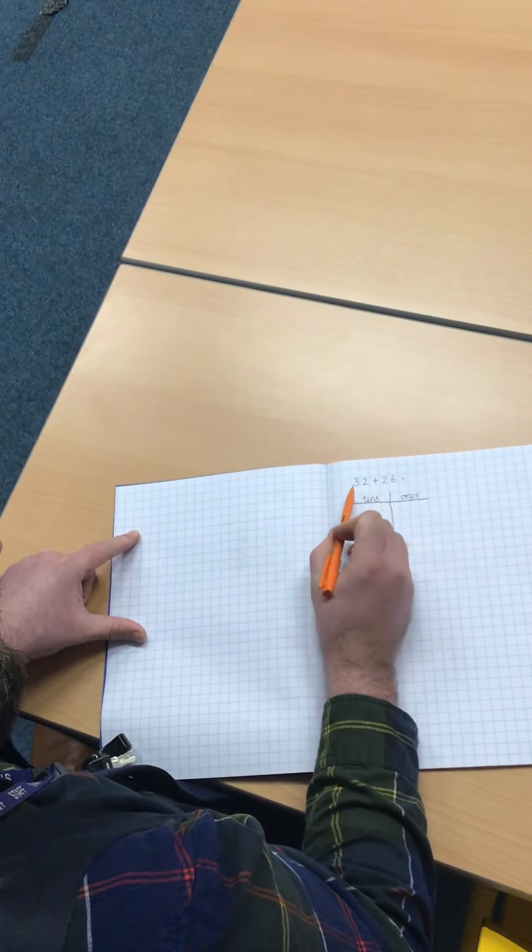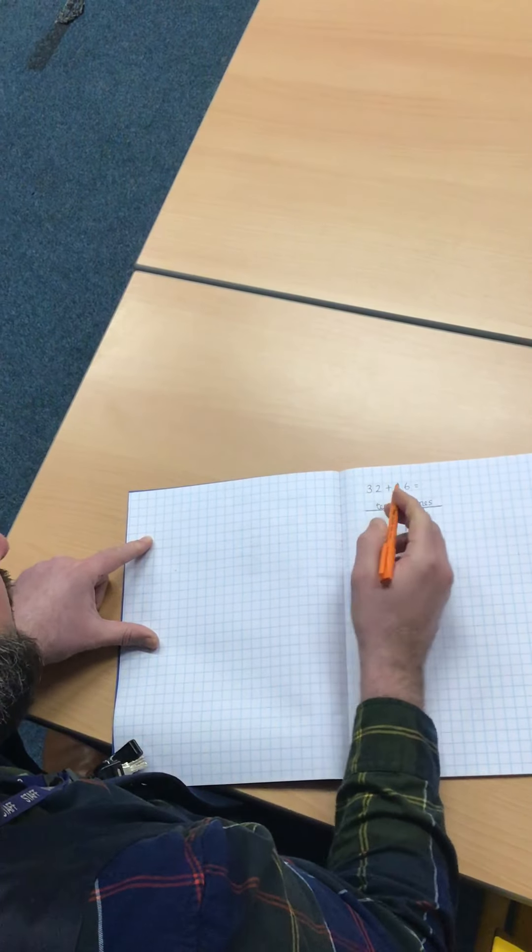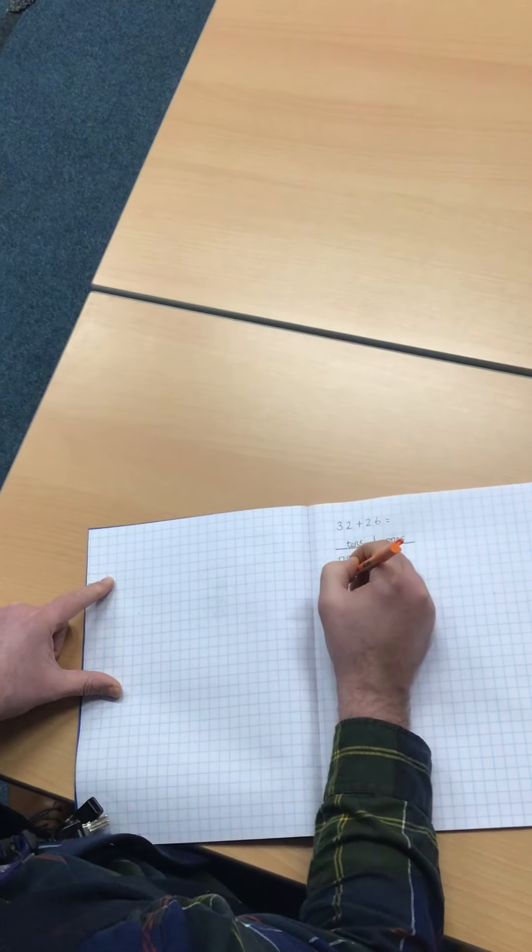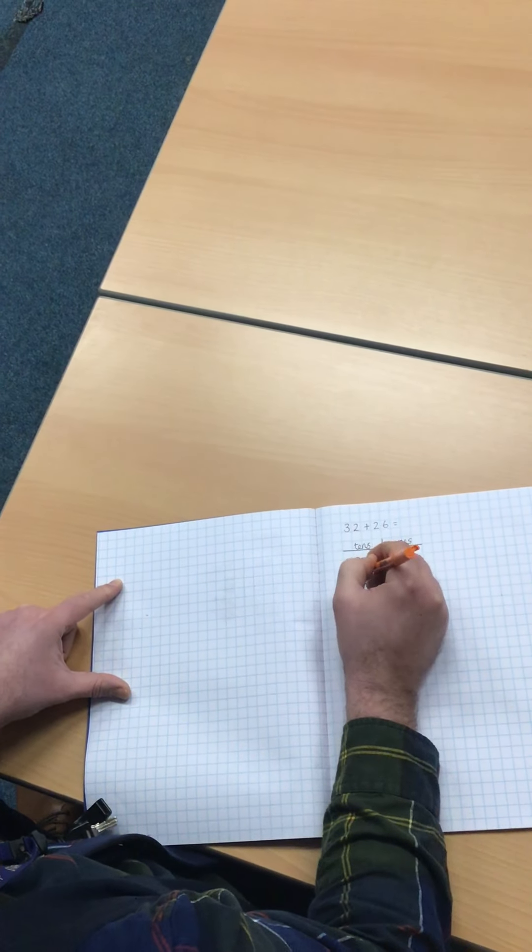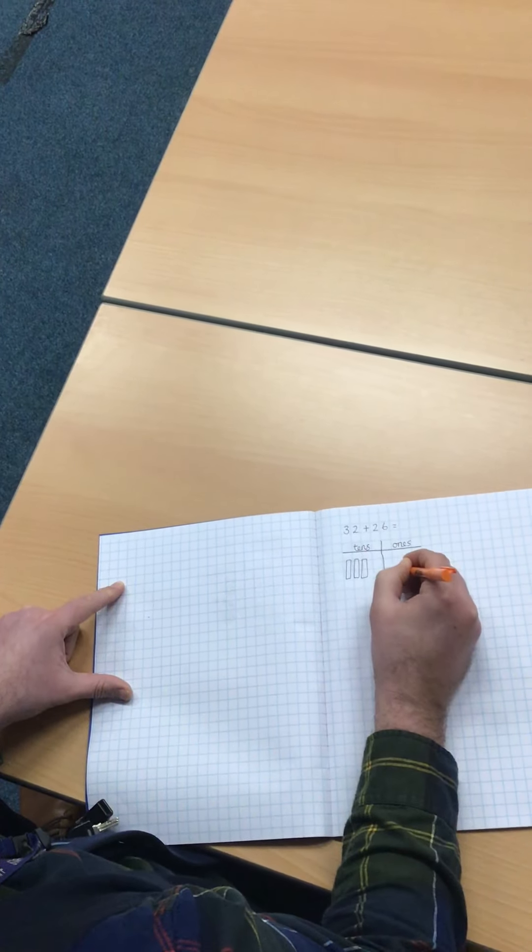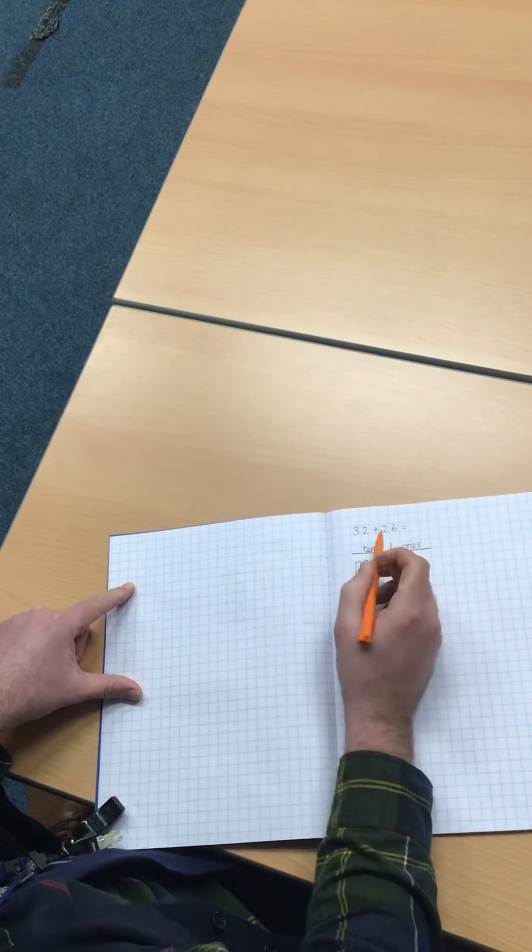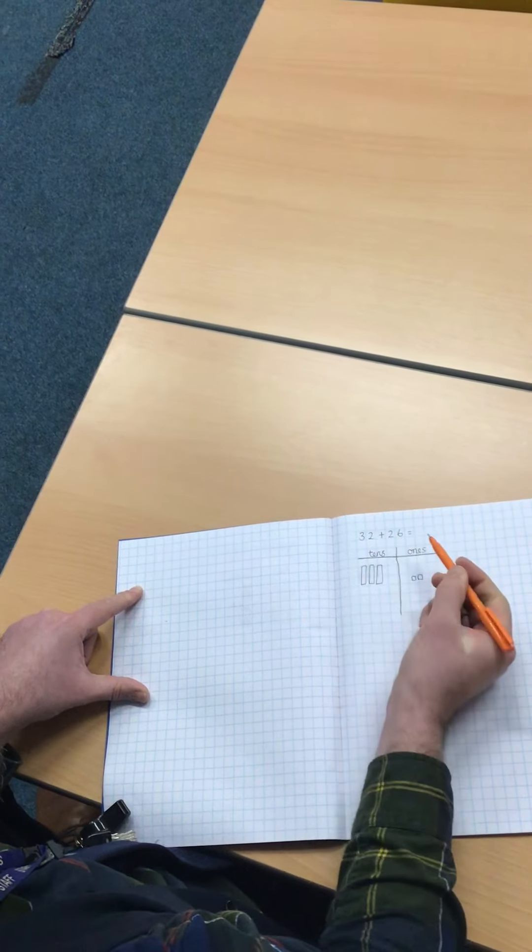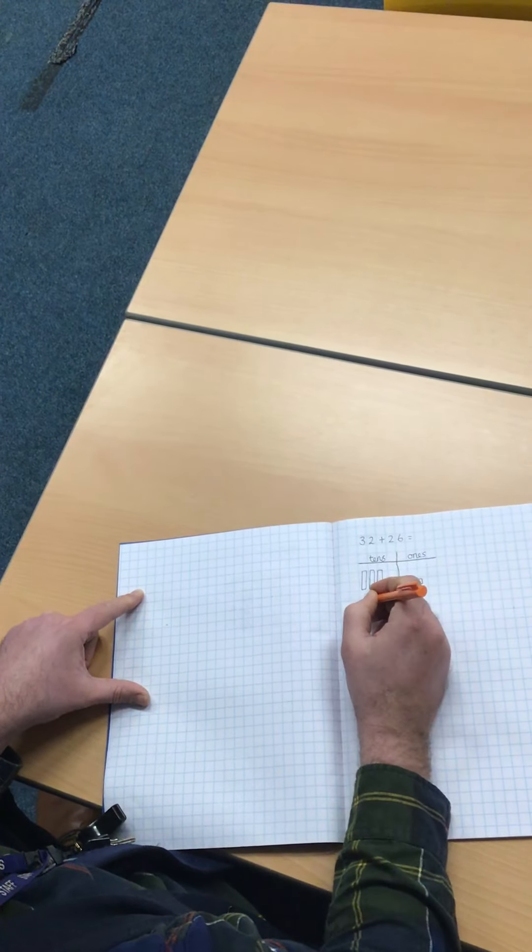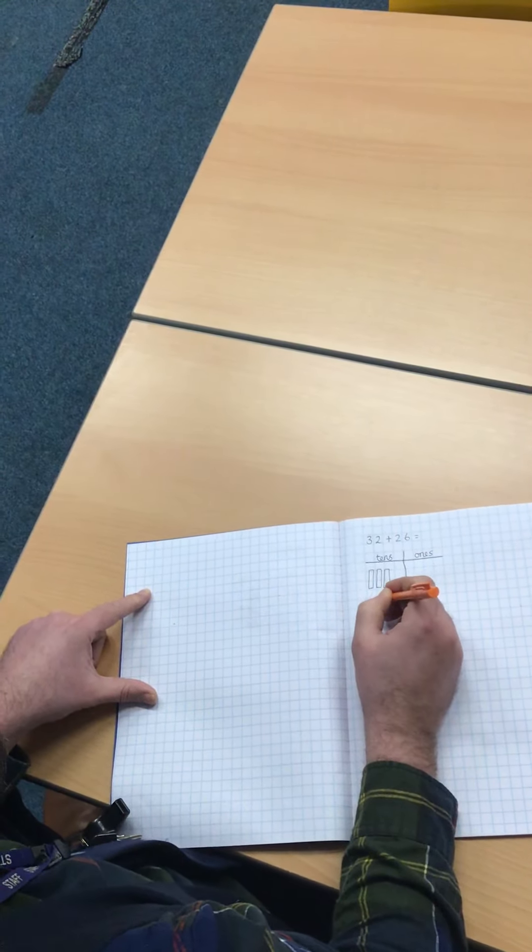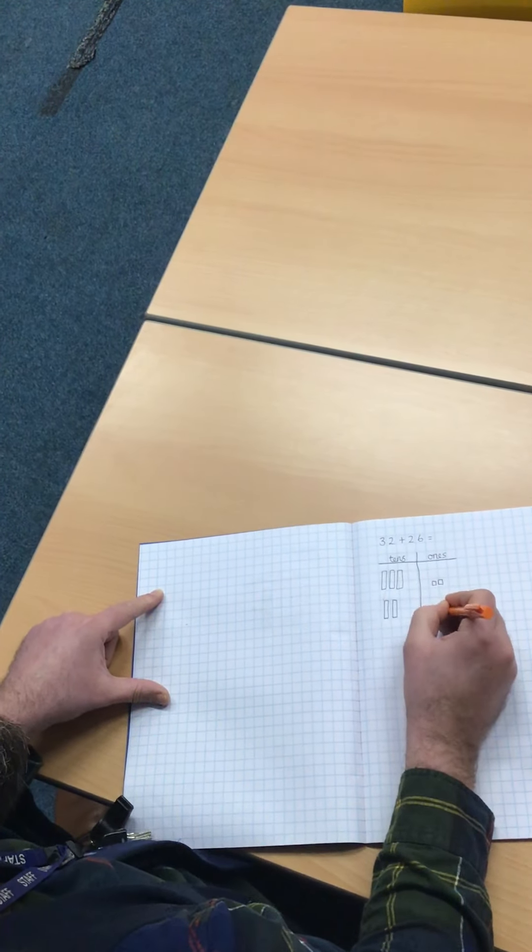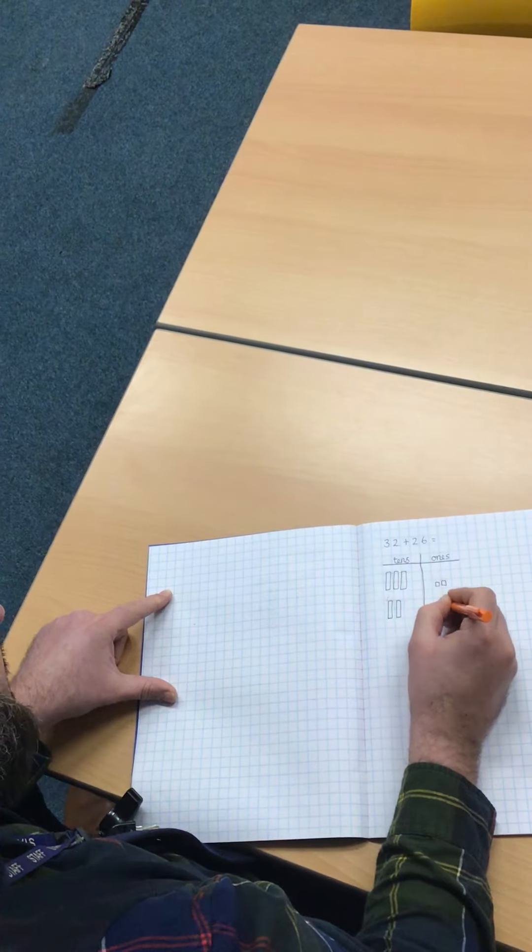So I'm going to draw the first number, and that has three tens and two ones. I'm going to draw the second number, and that has two tens and six ones, and I'm going to draw that underneath.